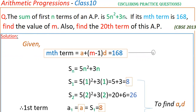So here, sum of first n terms is given, that is 5n squared plus 3n. This is Sn, and the mth term is also given, that is 168. So mth term is equal to a plus (m minus 1) into d, which equals 168. We have to find m. We don't know a and d values, so by using Sn we have to find a and d values first.